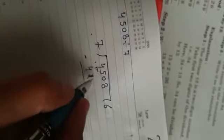7, 6 are 42. Subtract 5 minus 2, 3, 4 minus 4, 0.